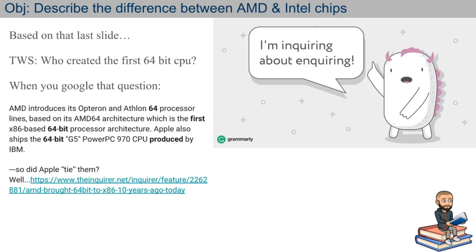Intel designed the x86 architecture, but who created the first 64-bit CPU? That honor goes to AMD — though perhaps Apple can be considered a tie, because Apple also shipped the 64-bit G5 PowerPC CPU. PowerPC is an IBM design, and Apple used it with 64-bit addresses and instruction sets, so maybe there's a tie between those two.